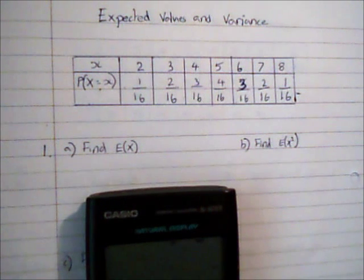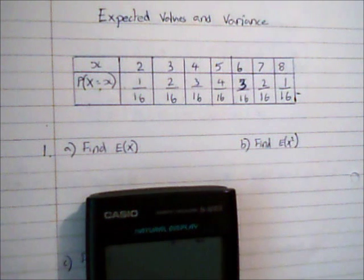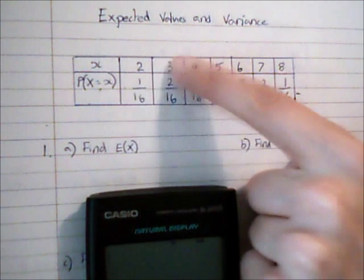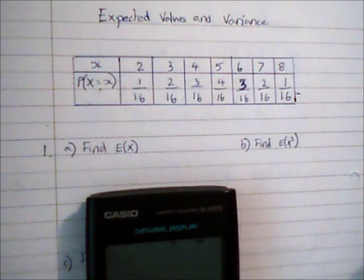So to calculate this I am going to do the outcome, so the value of the outcome multiplied by the probability. So I'm going to multiply the two numbers in each column and I'm going to do that for all of the numbers and sum them together.